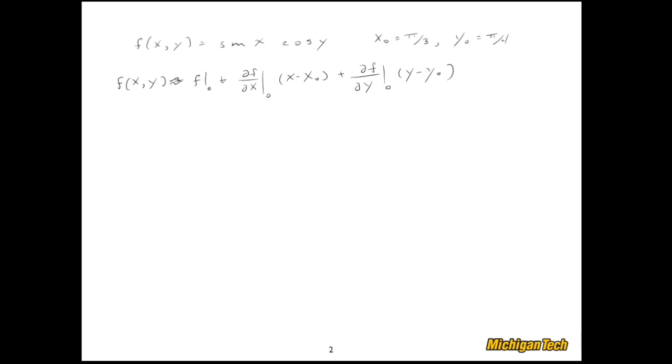So let's see, before I plug everything in, why don't I go ahead and just calculate the partial of f with respect to x. So that gives me cosine x cosine y, and the partial of f with respect to y is equal to negative sine x sine y.